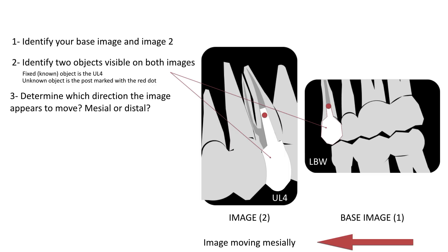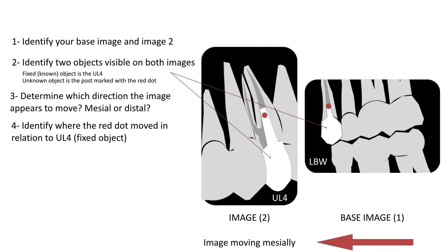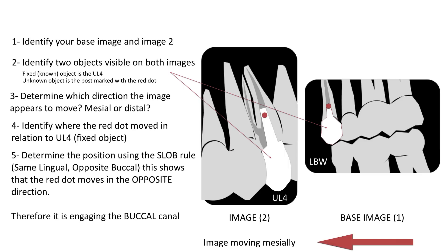Next, let us determine where the red dot has moved in relation to the fixed object, the upper left four. The red dot seems to be moving away from the direction of the mesial shift. So by using the SLOB rule — Same Lingual Opposite Buccal — the red dot is moving in the opposite direction; therefore the post is engaging the buccal canal.